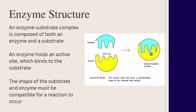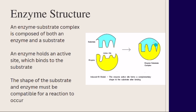The enzyme has that complementary shape — some AP Bio teachers describe this as a lock-and-key fit. Basically, the shape of the substrate and the enzyme has to be compatible for a reaction to occur, and the substrate binds to the active site.